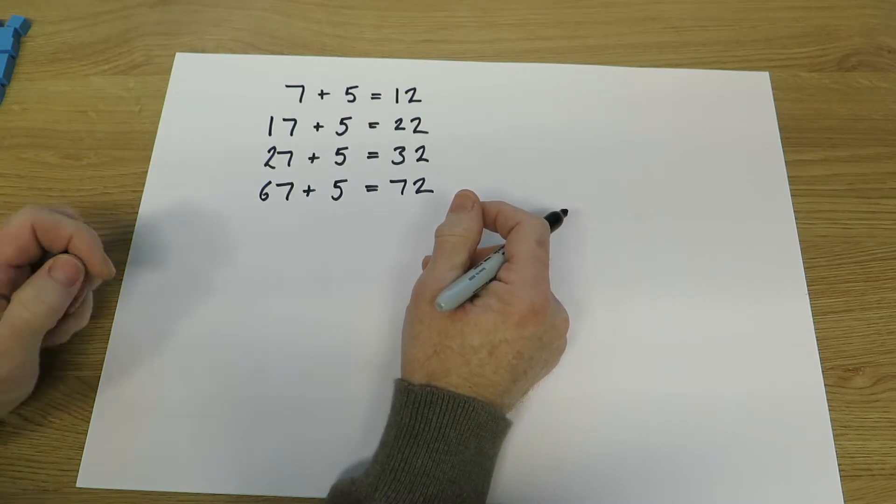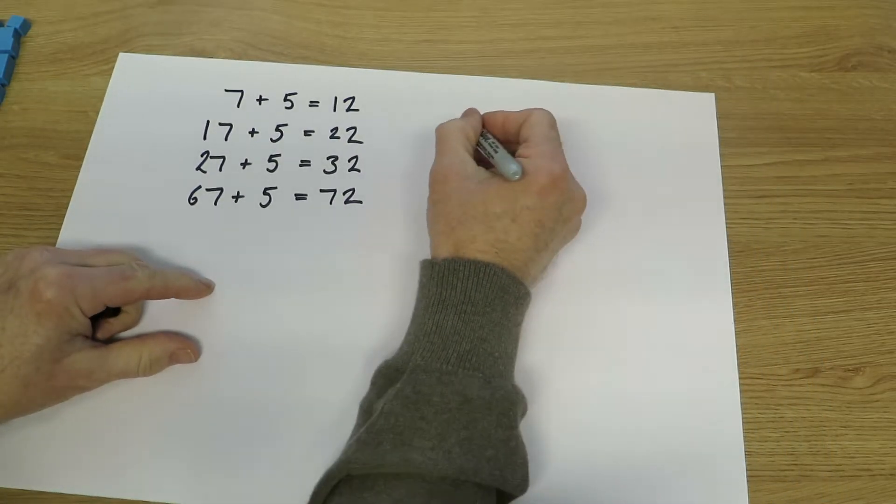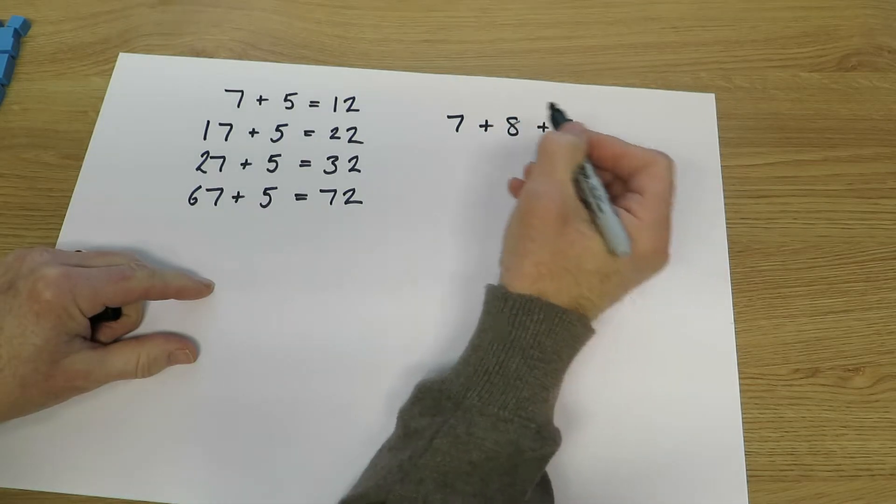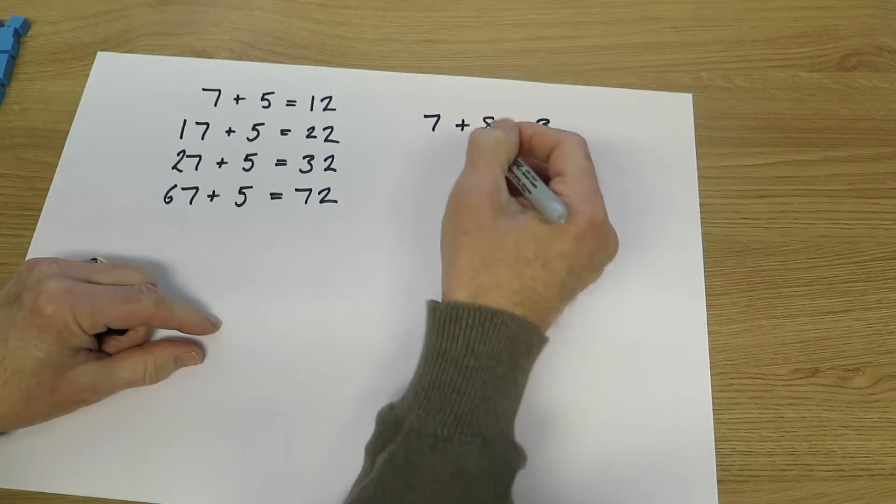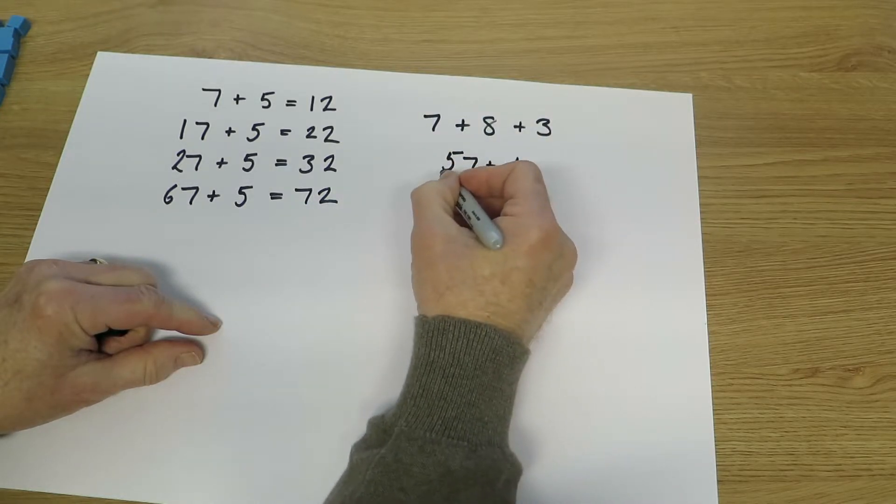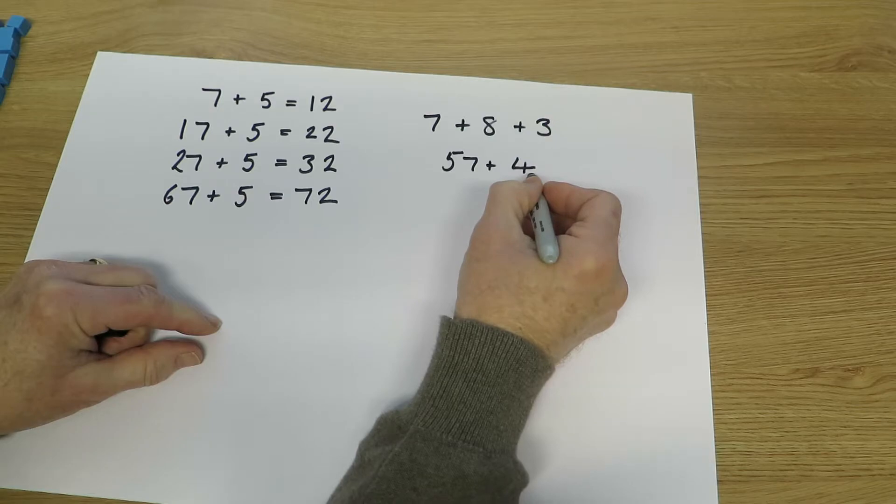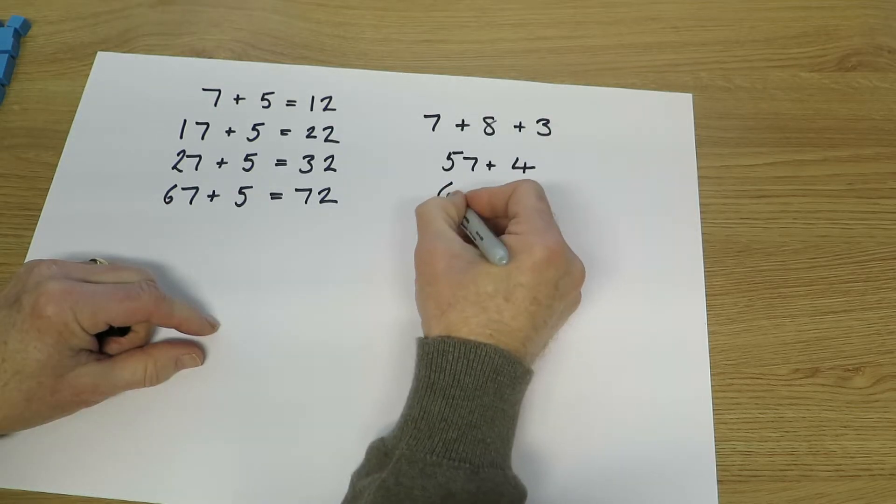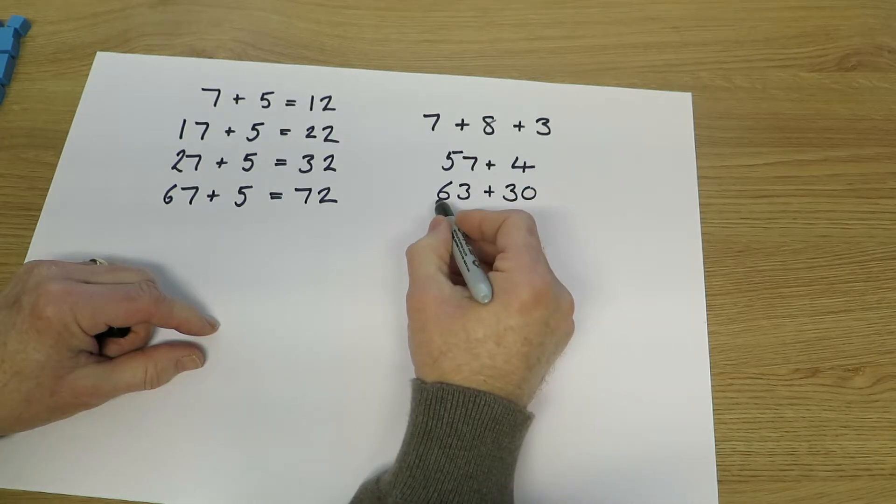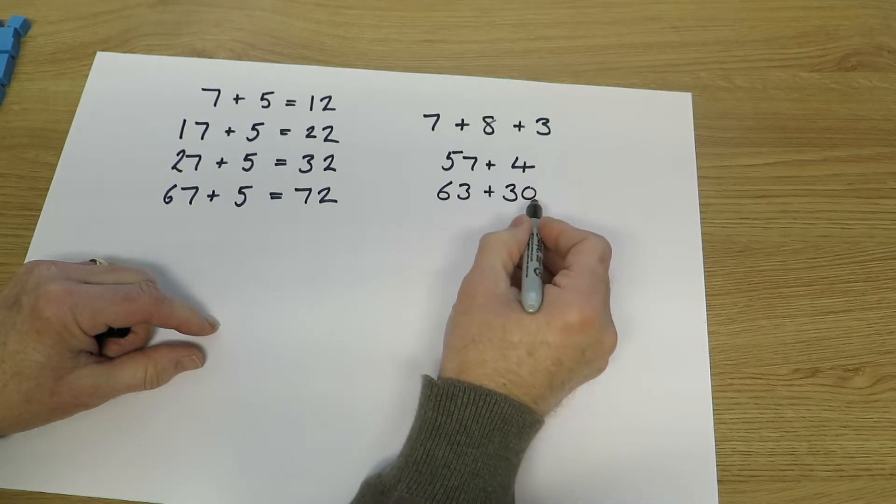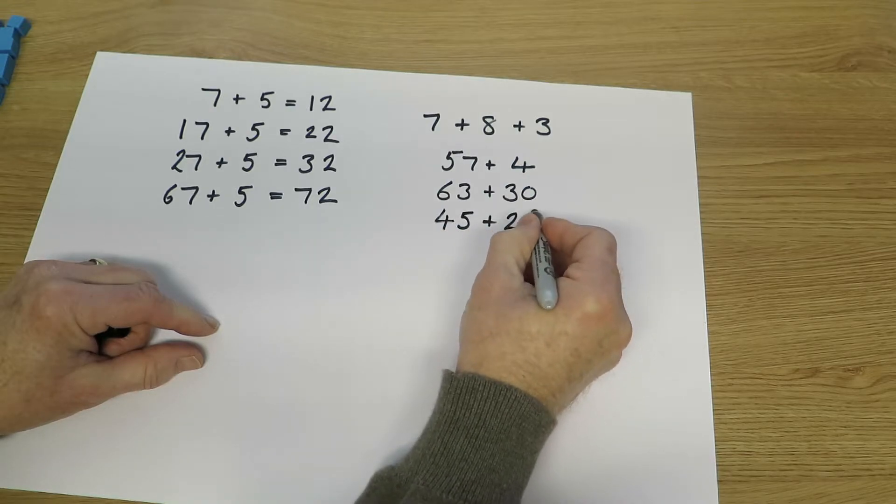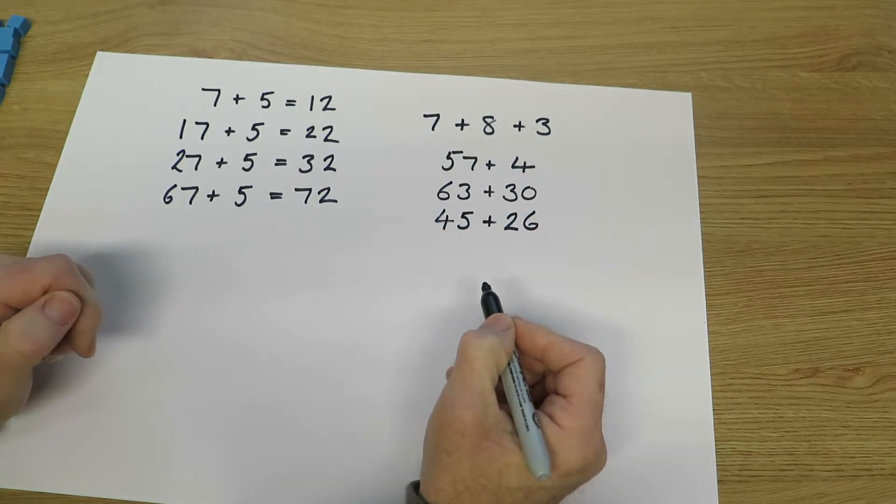And they will also be working mentally on questions such as 7 add 8 add 3, so 3 single digit numbers, or 57 add 4, a 2-digit number add a 1-digit number, or 63 add 30, which is a double-digit number plus tens, or 45 plus 26, which is obviously two 2-digit numbers.